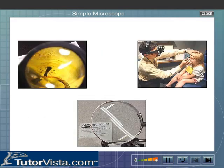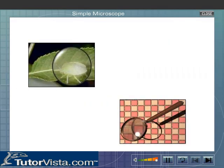A simple microscope uses the principle of a magnifying lens or reading glass. A simple microscope consists of a convex lens of short focal length mounted on a plastic or metal holder as shown here.